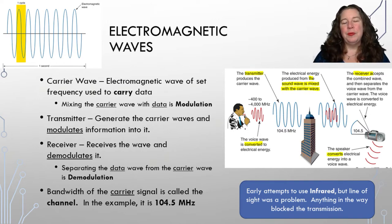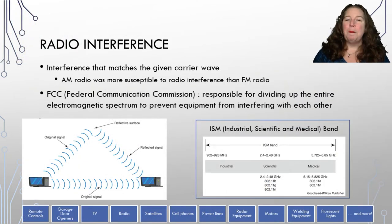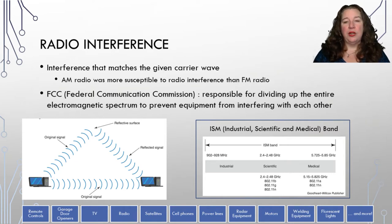Originally, they tried to use infrared, but infrared requires line of sight — if you had a building or a hill in the way, that's not going to work. So we switched to electromagnetic waves. Anything that matches your carrier wave frequency can be considered interference. AM radio was much more susceptible to interference than FM, which is why many things switched to FM signals — they didn't have as much interference from other things running on the same carrier wave.